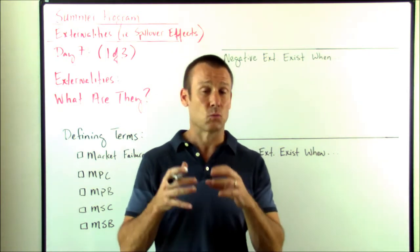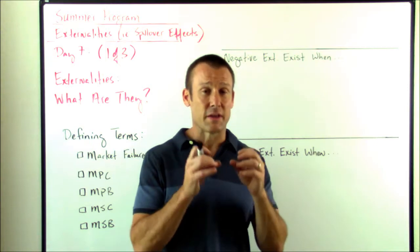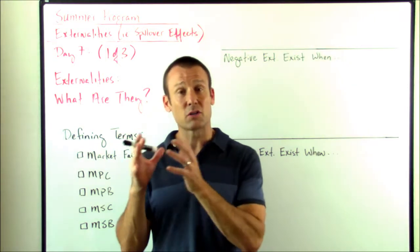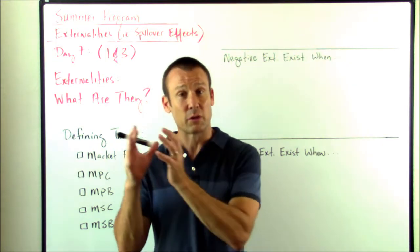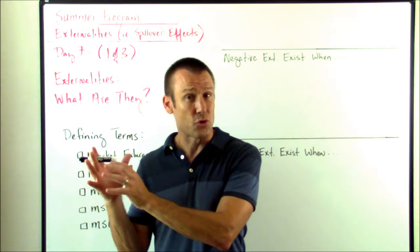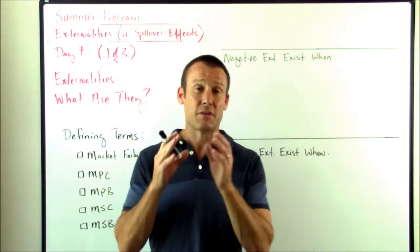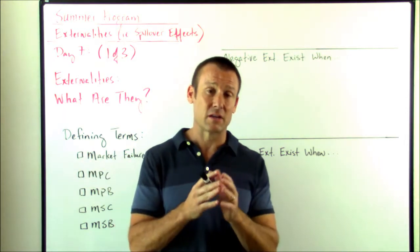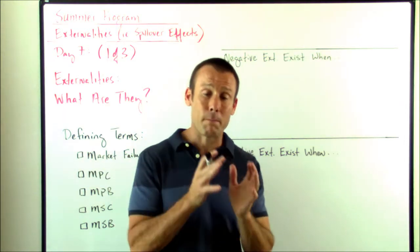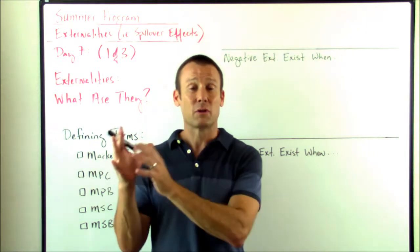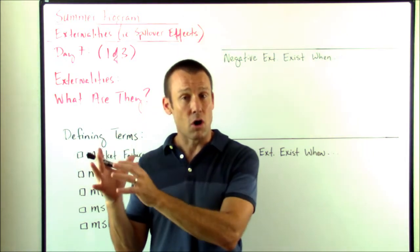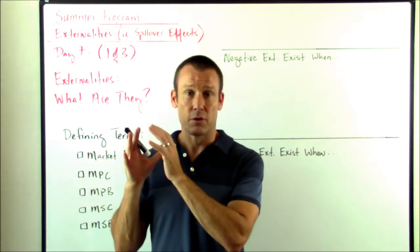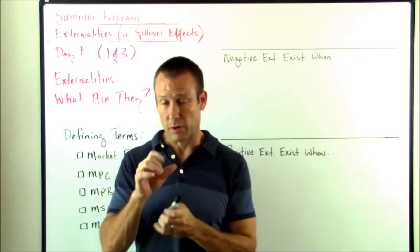So we can see negative externalities — that's a situation where there's a spillover cost, where costs are spilling over outside of the market participants to third parties. And there are positive externalities — that's where we have a spillover benefit, where benefits are spilling over to non-market participants, which we call third parties.